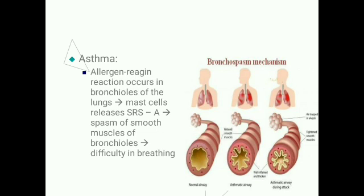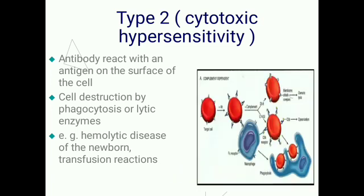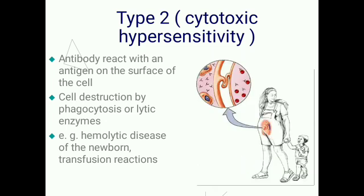Type 2, also known as cytotoxic hypersensitivity, involves antibodies reacting with an antigen on the surface of a cell. The cells are destroyed by phagocytosis or by lytic enzymes. Examples include blood transfusion reactions, where antigen-antibody reaction occurs on the surface of red blood cells causing them to be phagocytosed, and hemolytic disease of the newborn.